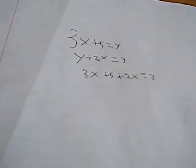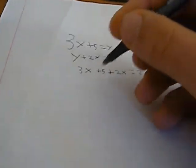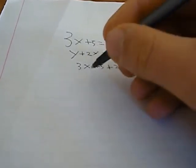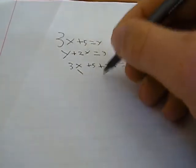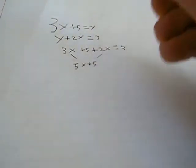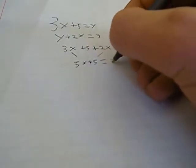Now we will solve for x in this equation. We will just combine 3x and 2x for 5x. So 5x plus 5 is equal to 3.